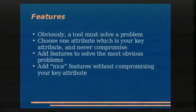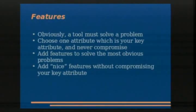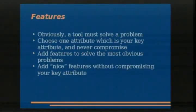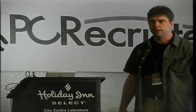Features — we said features are the most important thing. You want to try to solve a problem. Pick one key attribute that's important to your tool and never ever compromise that. If you can add features around the outside of that key attribute, great. If you find that any of your features are compromising that key attribute, that's bad. And we'll look at a handful of tools that have really done this in a great way — software and others.